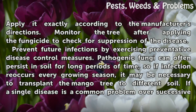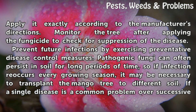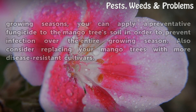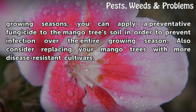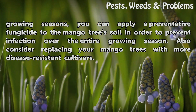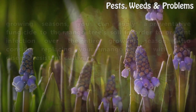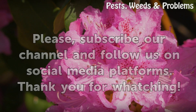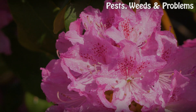Prevent future infections by exercising preventative disease control measures. Pathogenic fungi can often persist in soil for long periods of time, so if infection reoccurs every growing season, it may be necessary to transplant the mango tree to different soil. If a single disease is a common problem over successive growing seasons, you can apply a preventative fungicide to the mango tree's soil in order to prevent infection over the entire growing season. Also consider replacing your mango trees with more disease-resistant cultivars.